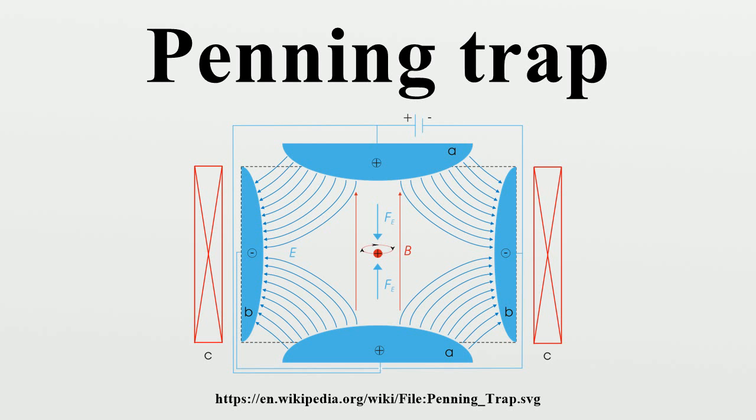Single ions can be investigated in a penning trap held at a temperature of 4K. For this the ring electrode is segmented and opposite electrodes are connected to a superconducting coil and the source and the gate of a field-effect transistor. The coil and the parasitic capacitances of the circuit form an LC circuit with a Q of about 50,000. The LC circuit is excited by an external electric pulse.